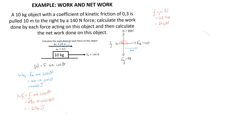We can also calculate the work done by the force of gravity: force of gravity (98 N) multiplied by displacement (10 m) multiplied by the cosine of the angle between them. Since the force of gravity and displacement are perpendicular to each other, the cosine of 90° is zero, so gravity does zero work on this object. The same is true for the normal force, which is also perpendicular to the displacement and therefore does no work.